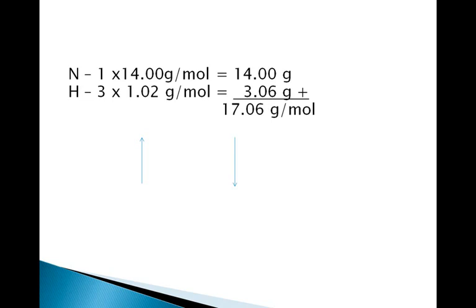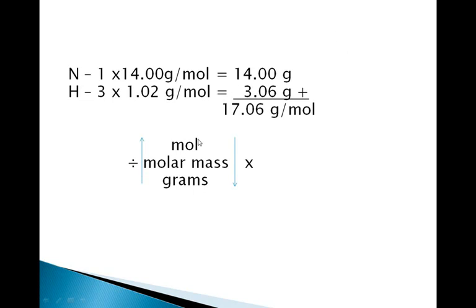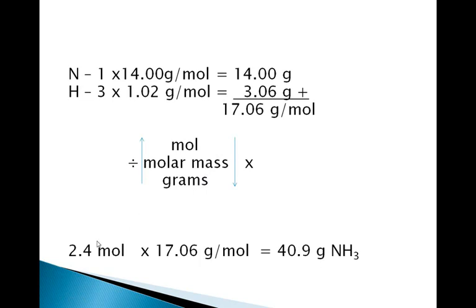Using our diagram from HELP, we are going to convert moles to grams. The arrow shows we are going from moles to grams; the other arrow shows going from grams to moles. We have 2.4 moles of NH3 which we want to convert to grams. We are going to take the 2.4 moles and multiply it times the molar mass to get the number of grams. 2.4 moles multiplied times 17.06 grams per mole gives an answer of 40.9 grams of NH3.